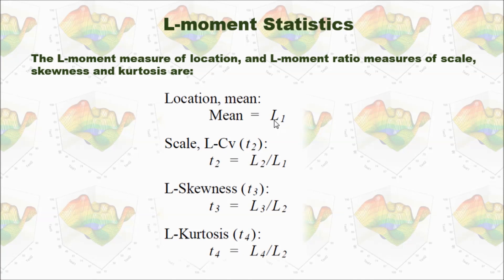For example, L1 shows us the mean of the data. That means the location. And L2 divided by L1 shows us the scale. And L3 divided by L2 will show us the skewness of the data, and L4 divided by L2 will show us the kurtosis of our data.